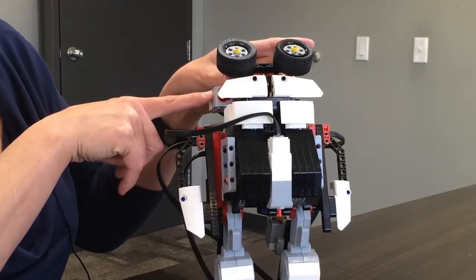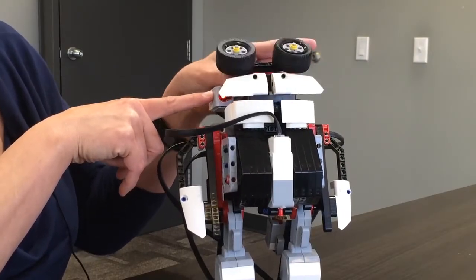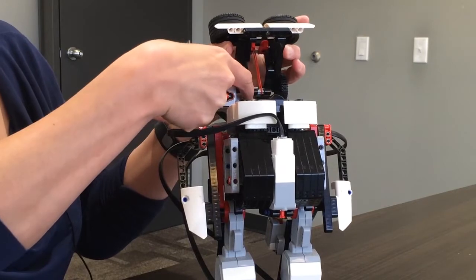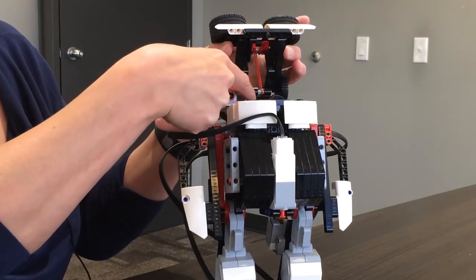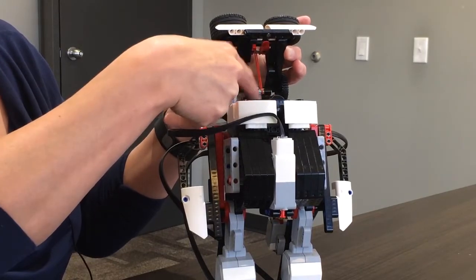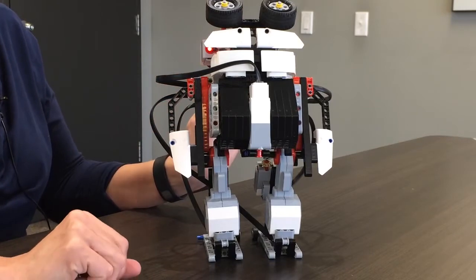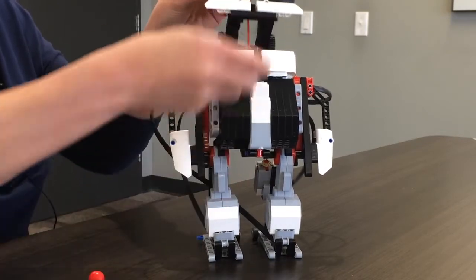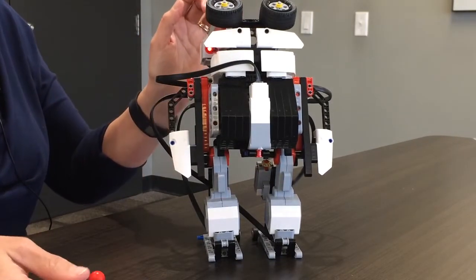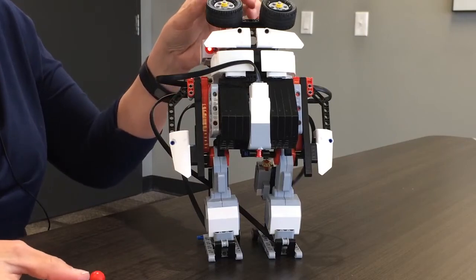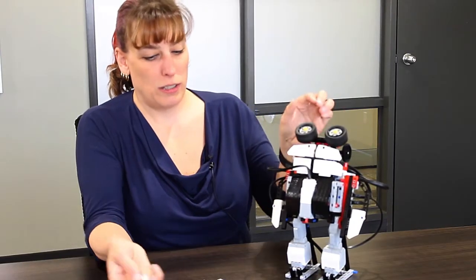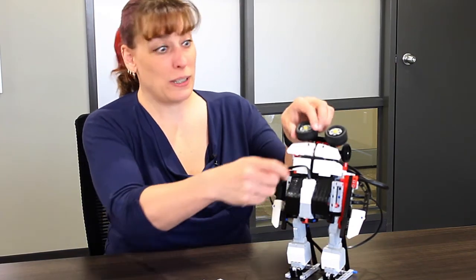So this sensor here helps him determine whether his mouth is open or closed, so you can see that it blocks it there. And this one here is an infrared sensor which helps him determine when he's full. I'm gonna feed him and once he's full he determines when he's full. I never know when he's gonna determine he's full.